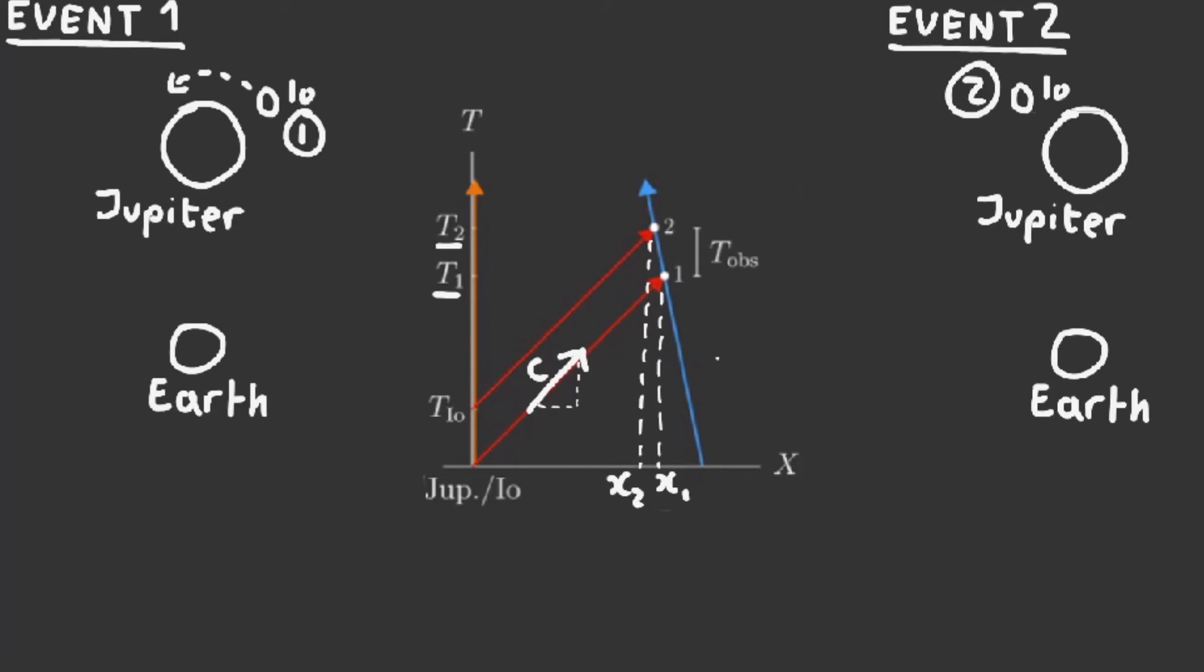Speed is distance over time, and therefore the gradient of the line is very simply the value of c. However, as space-time diagrams flip the axis as mentioned previously, the gradient is in fact 1 over c, and this will help us to write T observed in terms of the absolute T_Io.